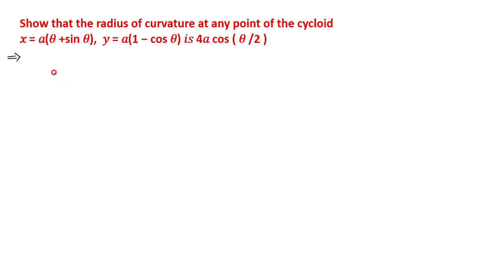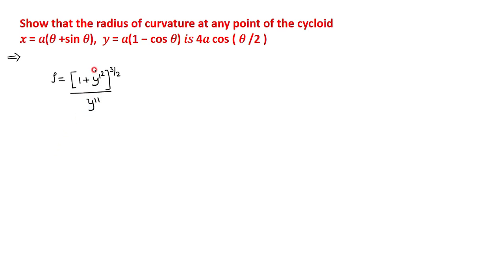The radius of curvature in Cartesian form is given by: rho equals (1 plus y-dash squared) raised to 3/2, divided by y-double-dash. For that, I have to find y-dash and y-double-dash from the two parametric equations.